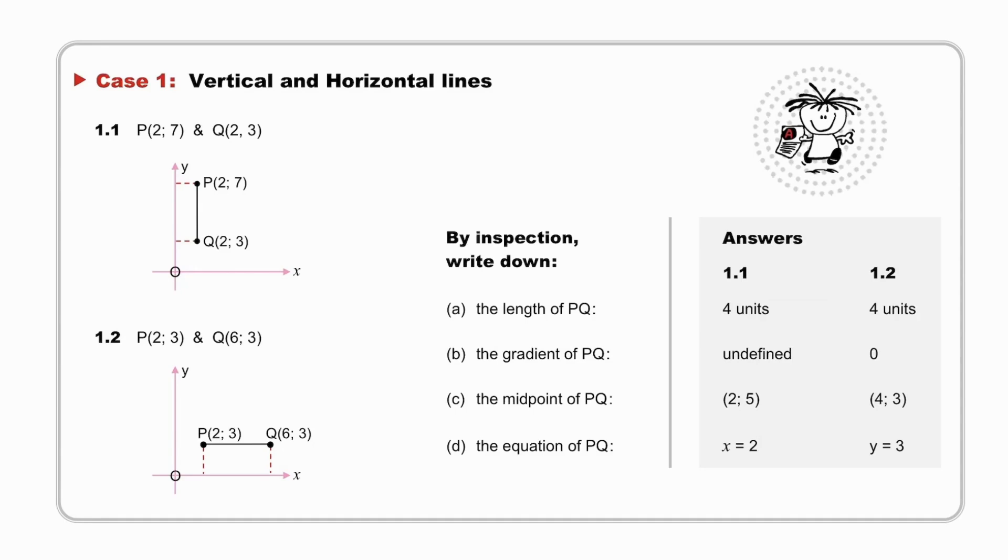Let's take a look. The length of PQ, in both cases, the length was four units. In 1.1, that was the difference between 7 and 3, the vertical length, and in case 1.2, it was the difference between 6 and 2, the horizontal length. The gradient of PQ, the gradient of this line is undefined because it is a vertical line, and the gradient of this line is 0 because it is a horizontal line.